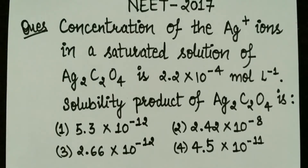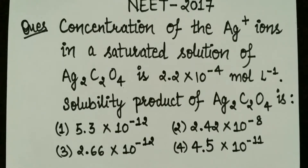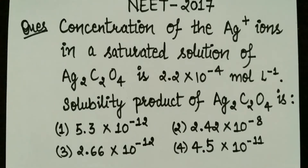Hello friends, we are going to discuss the exam solutions for NIT 2017. This is a question from the chemistry part. The question is: the concentration of Ag+ ions in a saturated solution of Ag2C2O4 (silver oxalate) is 2.2 × 10⁻⁴ mole per liter. We have to find the solubility product of silver oxalate.